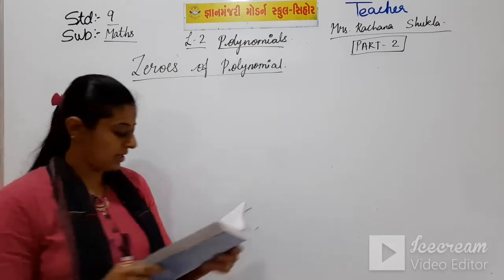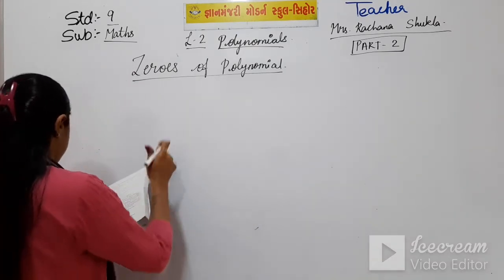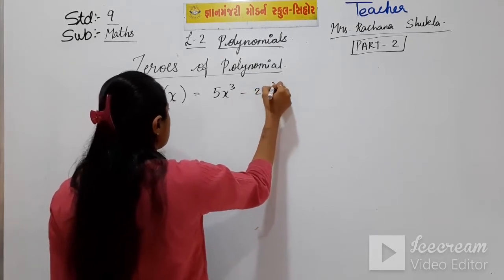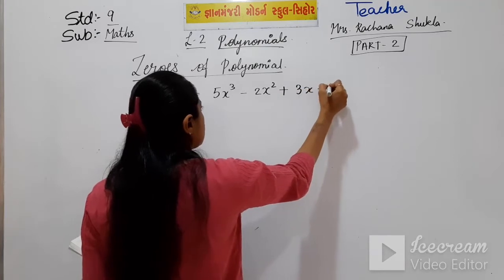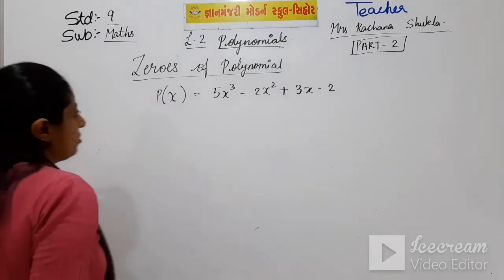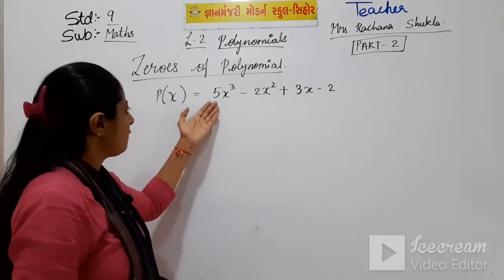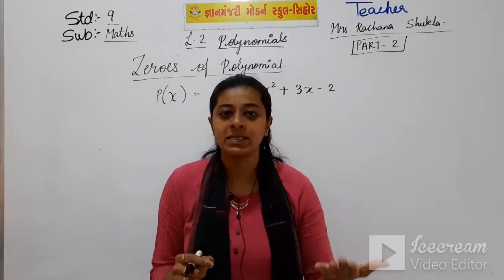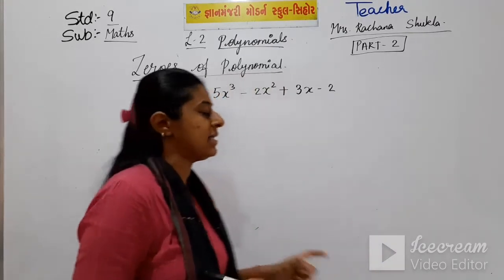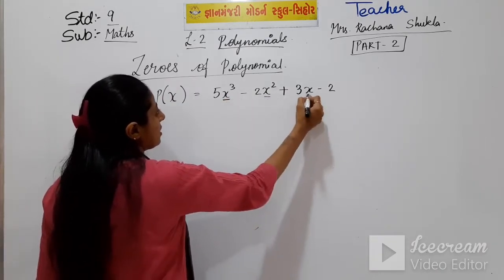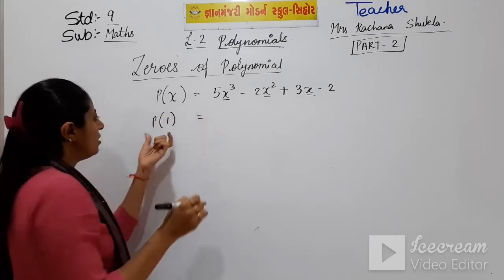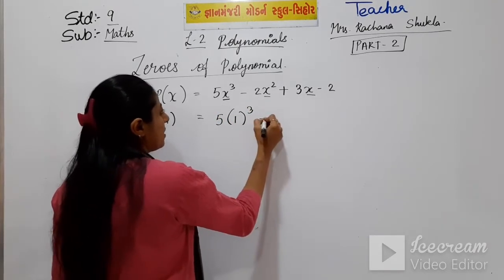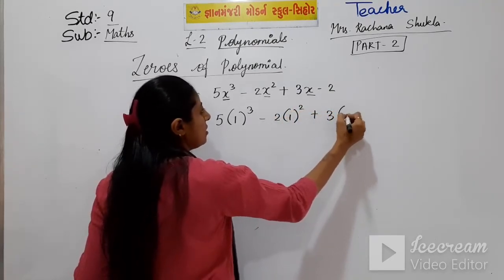First I will give you one sum and show you how to solve it. P of x is equal to 5x cube minus 2x square plus 3x minus 2. This is the given polynomial. Now we will put the value 1 in place of x, that is P of 1. We will write 1 in place of x: 5 into 1 cube minus 2 into 1 square plus 3 into 1 minus 2.